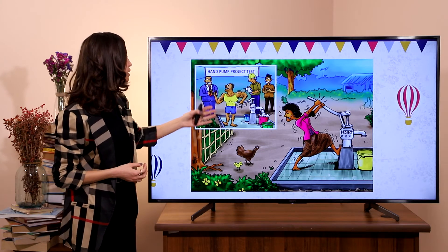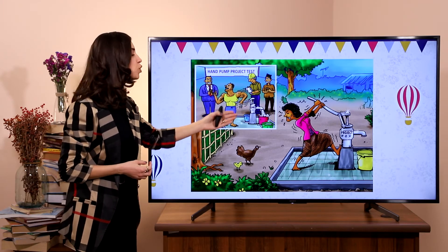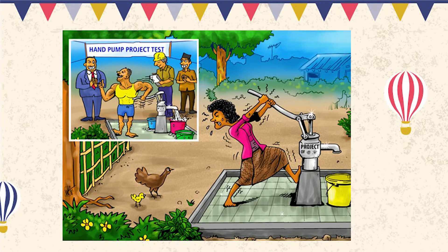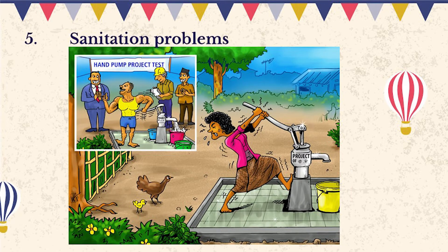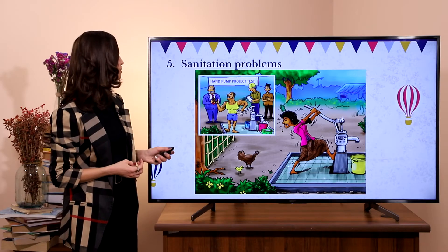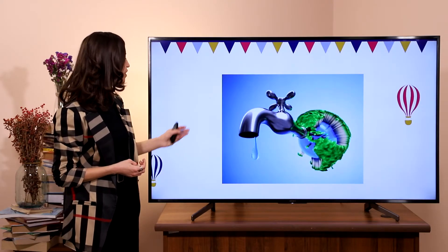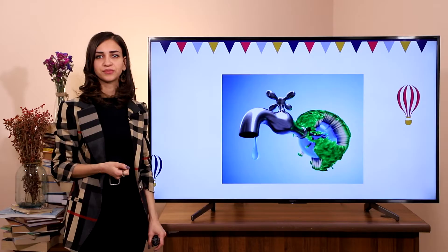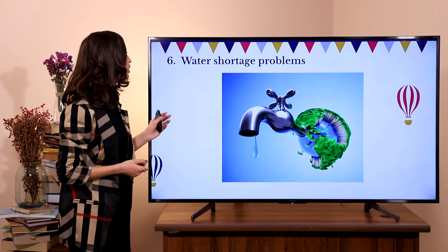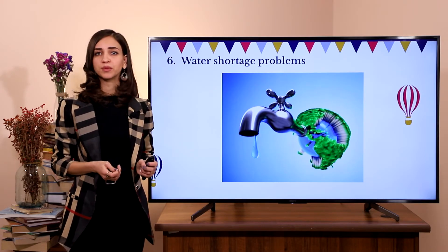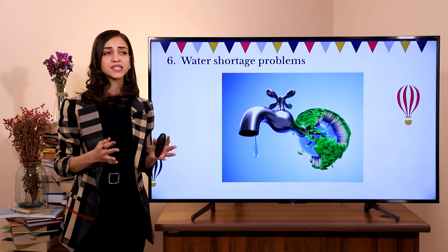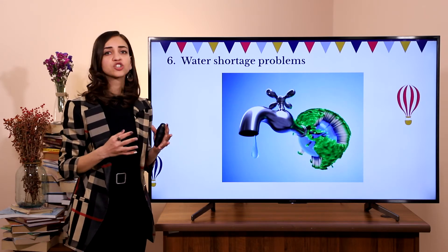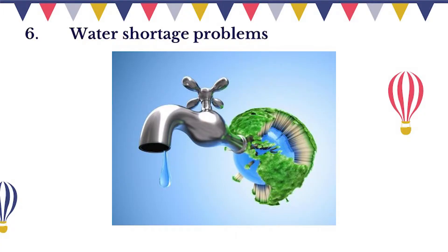Look at this picture. Look at the woman — what's the problem there? The problem is sanitation. Next picture — what can we understand? Here we have a water shortage problem. By saying this, we mean that we are short of water. There is no water for people to drink and to use.